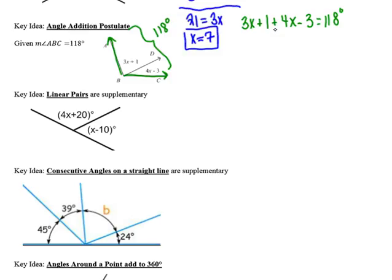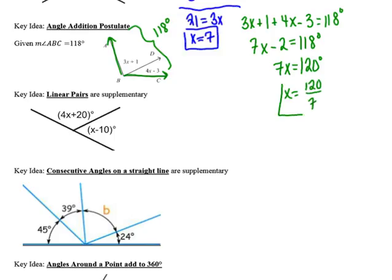Combining like terms on the left side, then adding 2 to both sides gives 7x equals 120. Dividing both sides by 7, I find x equals 120 over 7, and I'll leave that as an improper fraction.